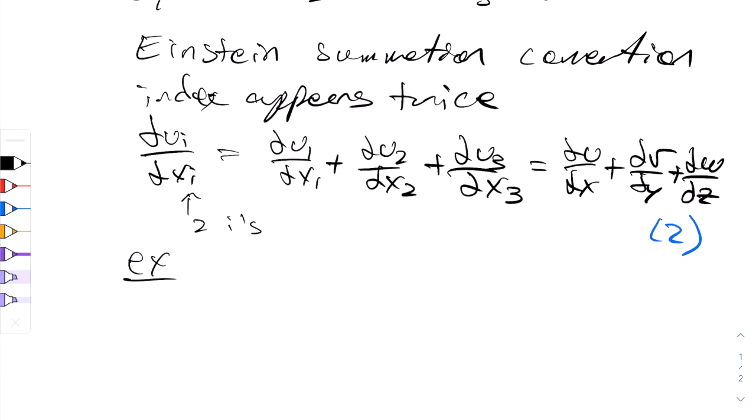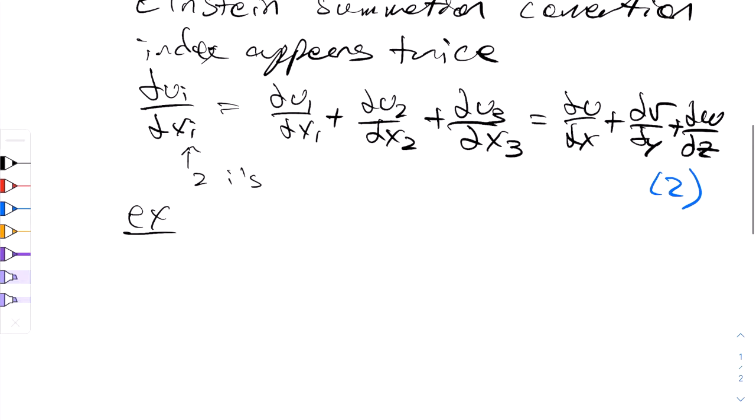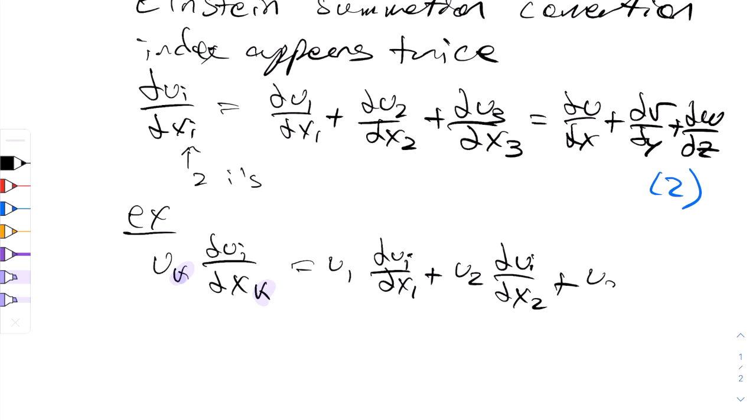Let's do another example. We might have uk partial ui partial xk. And let's write that out. So what are the summed indices? You'll see it's k indeed. Let's see the k here. Let's write that out. We'll have u1 partial ui partial x1 plus u2 partial ui partial x2 plus u3 partial ui partial x3.